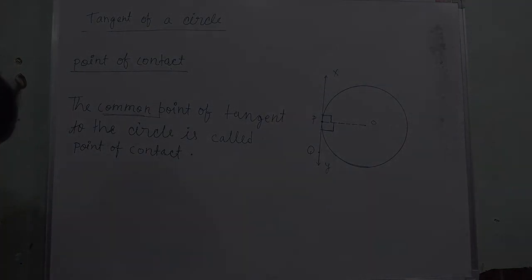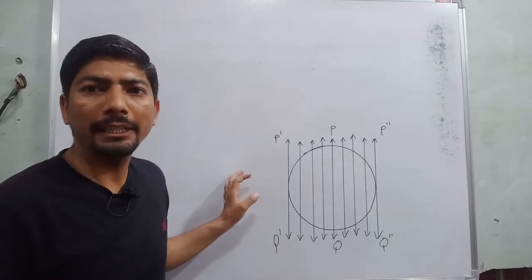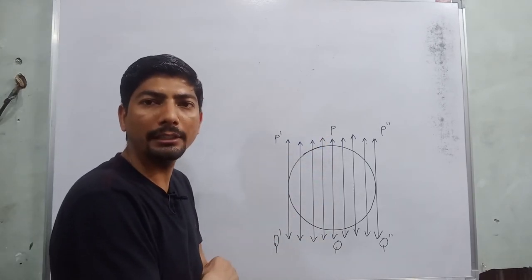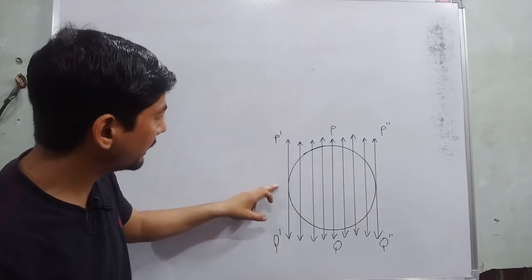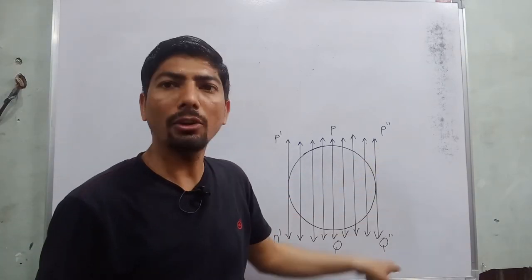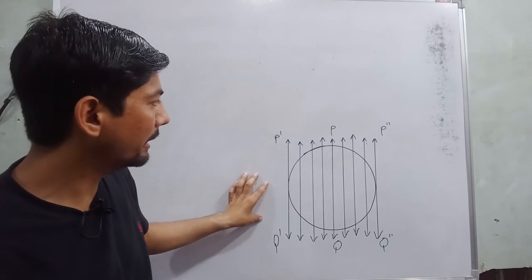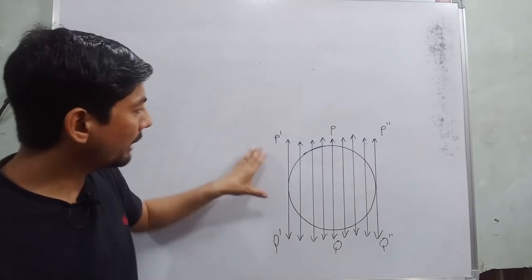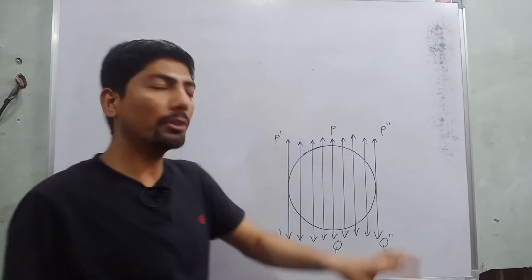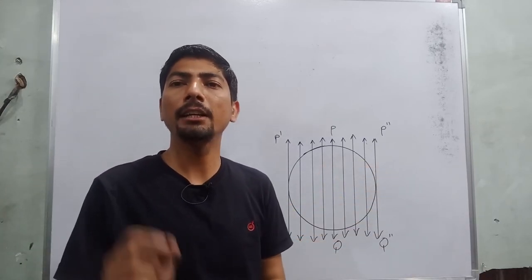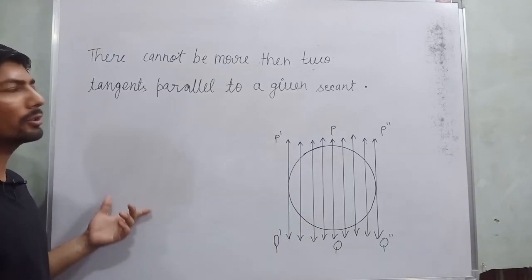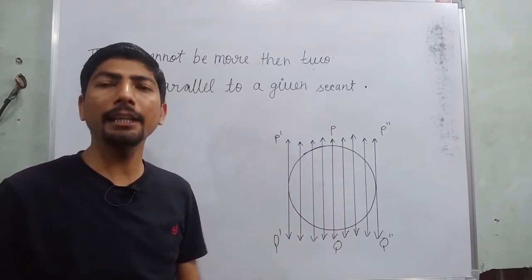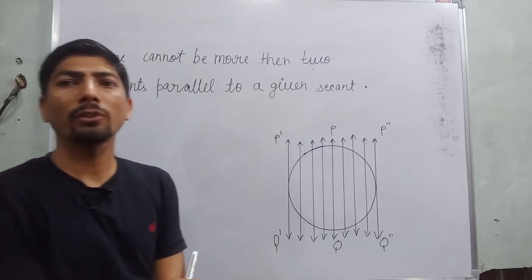Now let us do an activity. Let us suppose it is our circle and we draw a secant PQ. Now we draw more lines parallel to our secant. The last line which touches the circle is P'Q' and P''Q''. Observe these lines — P'Q' touches the circle as a tangent. The conclusion of this activity is that there cannot be more than two tangents parallel to a given secant. Agar aapko koi secant de diya gaya hai toh ek circle mein do parallel tangent se zyada nahi ho sakte.